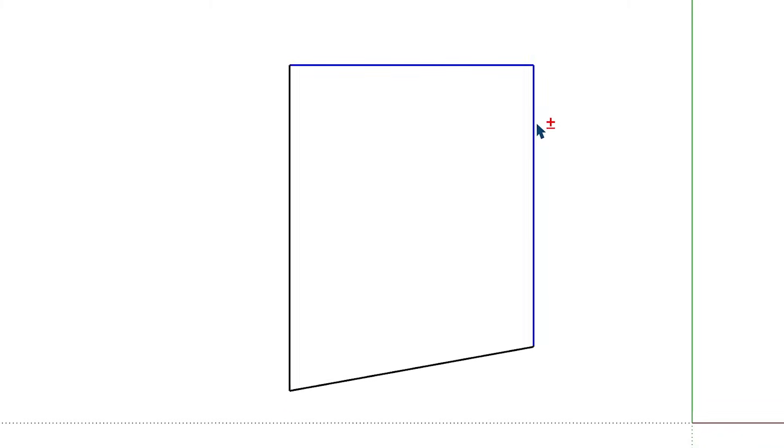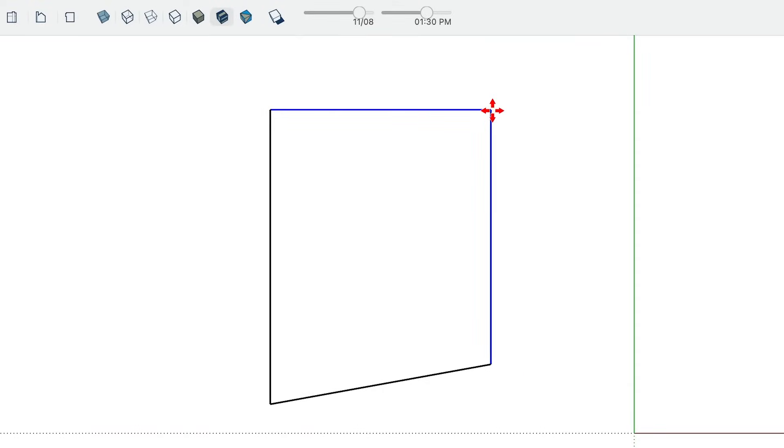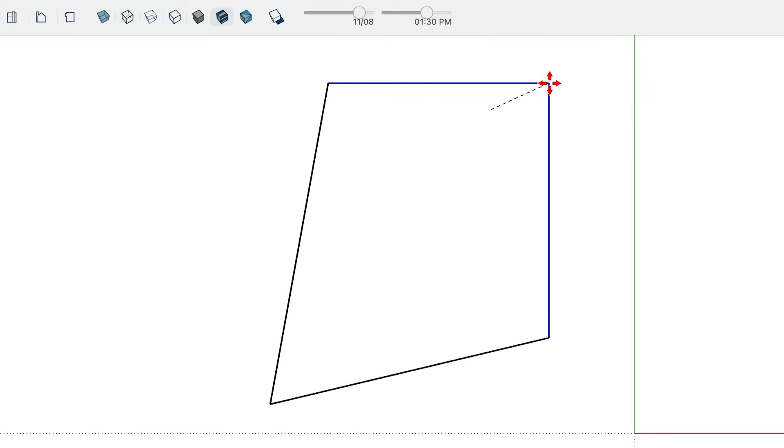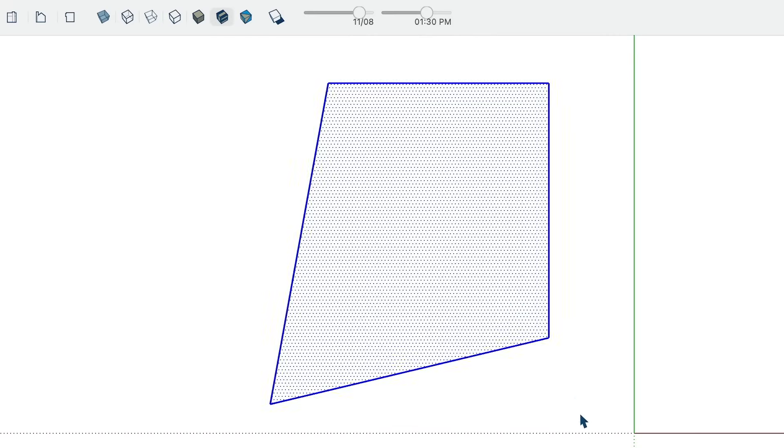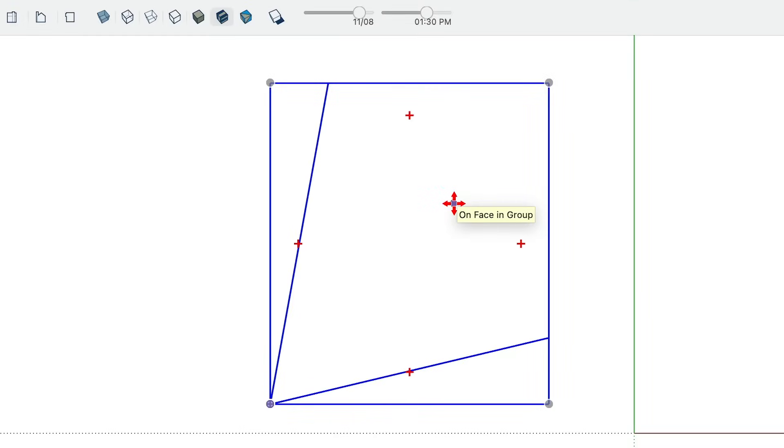Of course, you can move multiple edges and faces together at the same time. You just need to pre-select them with the select tool. And then the same rules apply with the move tool for editing the position of the selected geometry. And if you want to move a whole object, you can either pre-select all the geometry before using the move tool. Or if you've made it into a group, then you can just use the move tool to move the whole group together.